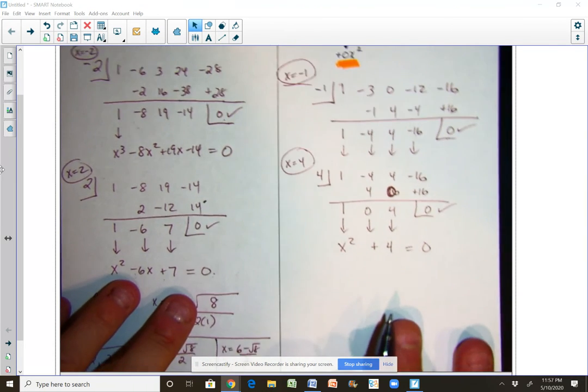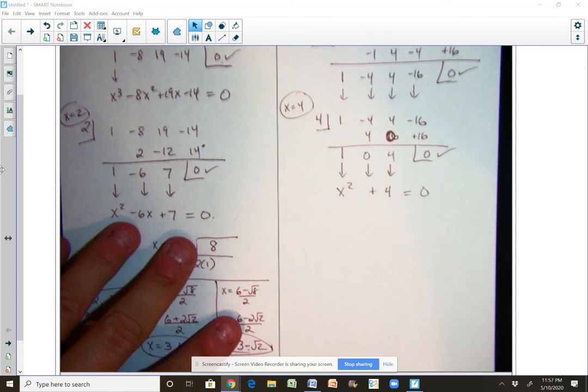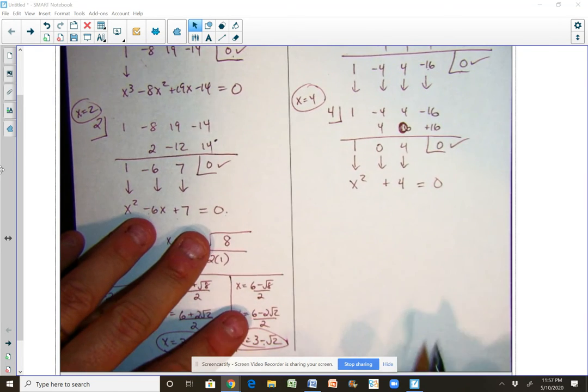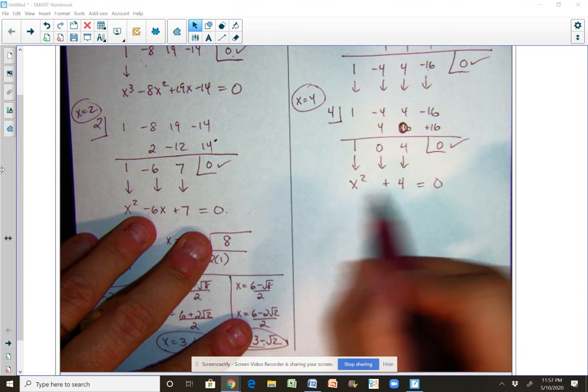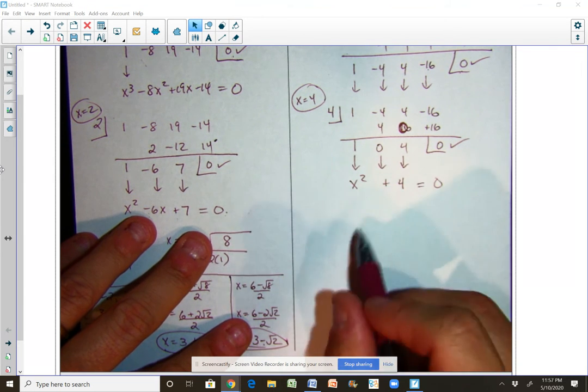So what are some methods we could use for this? Well you could definitely use a quadratic formula if you wanted. Be careful, it's not x squared minus 4, that would be a difference of two squares. This is not. This is a sum. So that doesn't work for that.